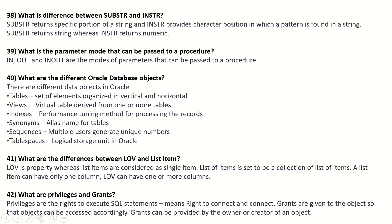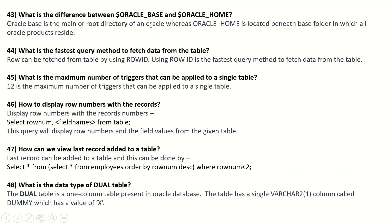What are the differences between LOV and list item? LOV is a property whereas list item is considered a single item. A list item is a collection of items; a list item can have only one column, while LOV can have one or more columns. What are privileges and grants? Privileges are the rights to execute SQL statements such as CONNECT. Grants are given to objects so they can be accessed accordingly. Grants can be provided by the owner or creator of an object.